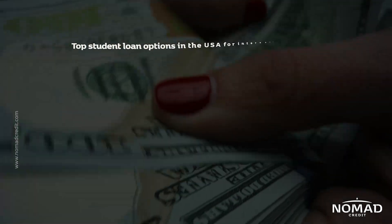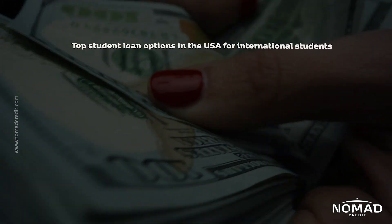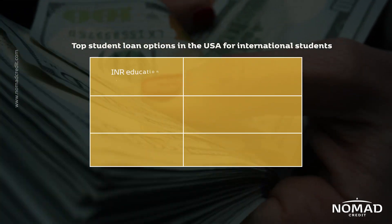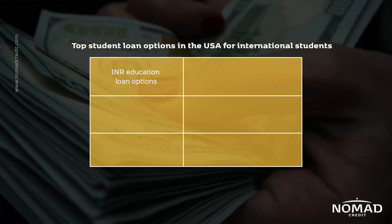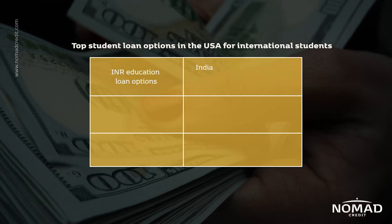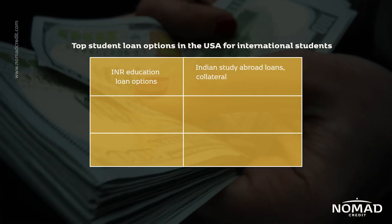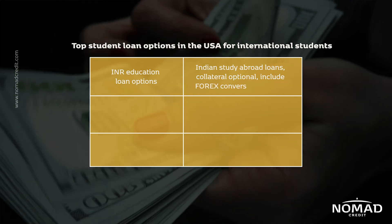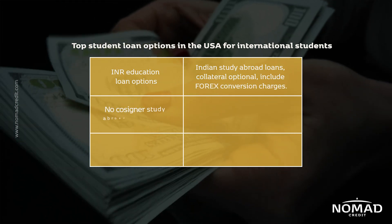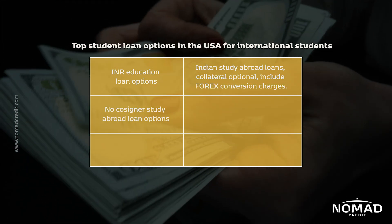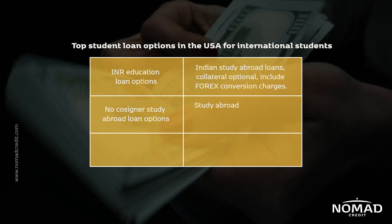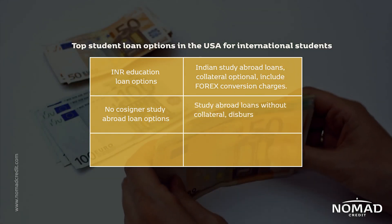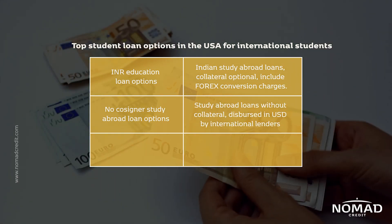Top student loan options in the USA for international students: INR education loan options, Indian study abroad loans with collateral optional, include forex conversion charges. No-cosigner study abroad loan options — study abroad loans without collateral, dispersed in USD by international lenders.